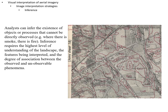Inference allows analysts to infer the existence of objects or processes that can't be directly observed — where there's smoke, there's fire. Inference requires the highest level of understanding of the landscape and the features being interpreted, and the degree of association between the observed and unobserved phenomena. An example shown is a soil survey map where numerous different soil types have been identified with a relatively high level of specificity and spatial resolution, all associated with the knowledge of soil scientists relating geomorphology to what's in the field.